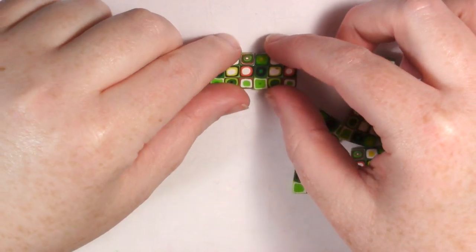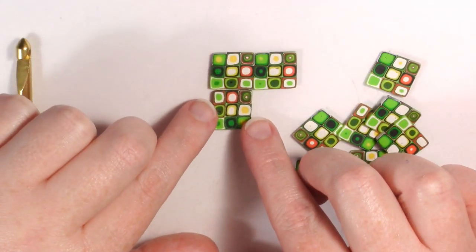Once you have all your slices, start to place them together the way you want your pattern to look on the hook.